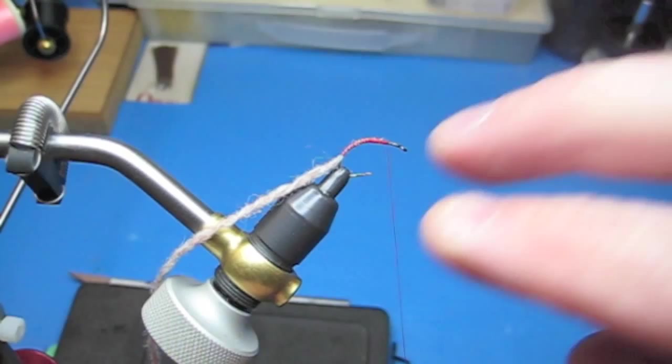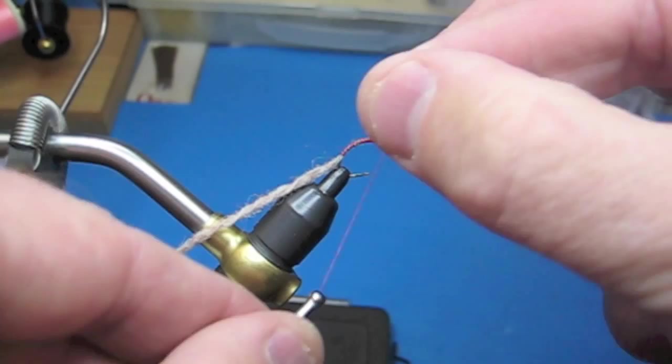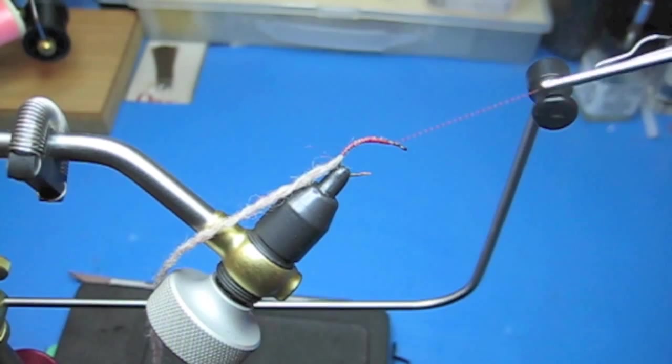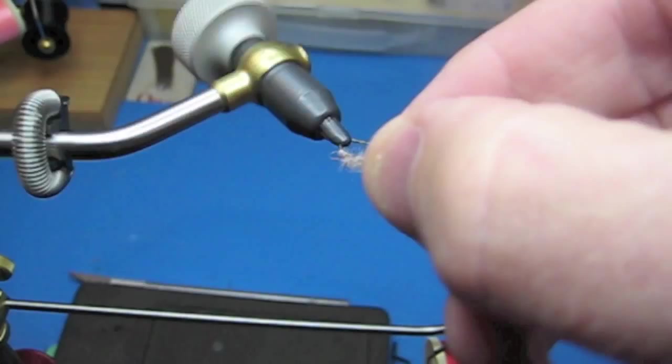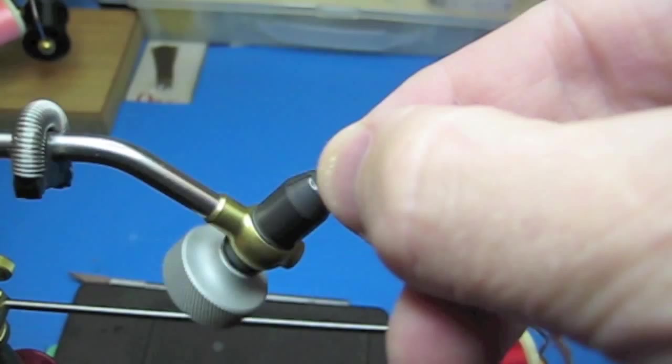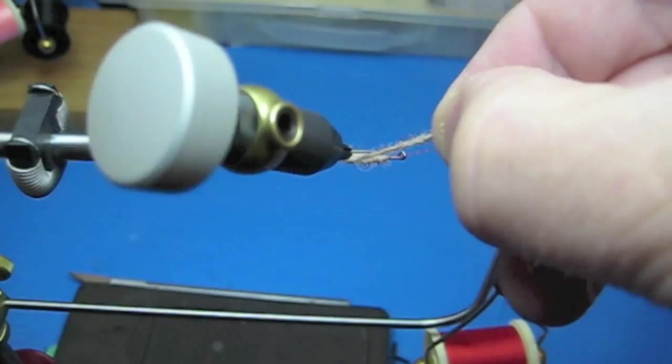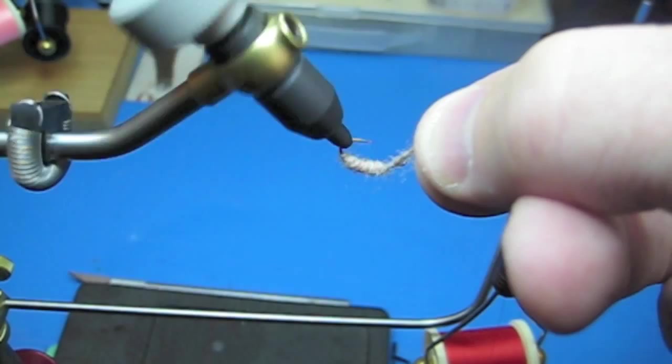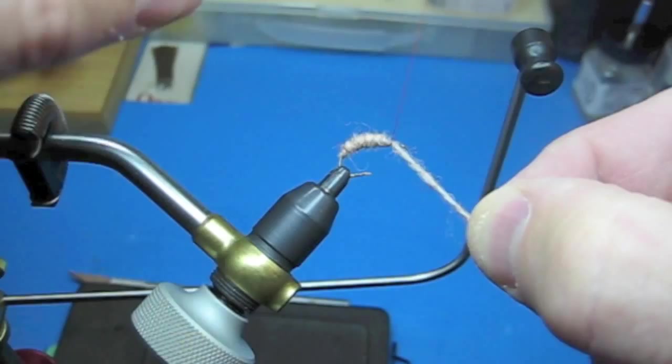Put a couple half hitches in to anchor the thread. Bring up your bobbin anchor and use your rotary vise to just tie on the thread. Now you can do this a little thicker. One layer works fine but you can go back over it and build it up just a little bit if you so desire. It's not absolutely required for this fly.